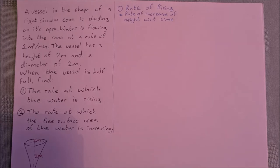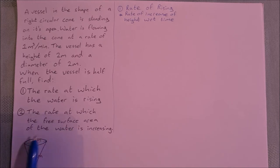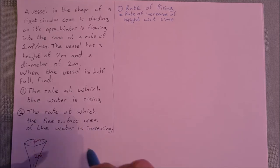The question says: a vessel in the shape of a right circular cone is standing on its apex. Water is flowing into the cone at a rate of one cubic meter per minute. The vessel has a height of two meters and a diameter of two meters. When the vessel is half full, find: one, the rate at which the water is rising — that's the rate at which the height is increasing — and two, the rate at which the free surface area of the water is increasing, that is, if you were to look down on the cone, the surface area of the water that you would see.